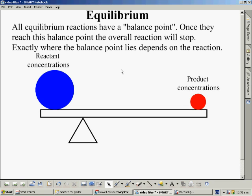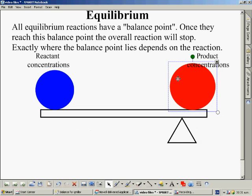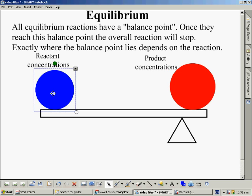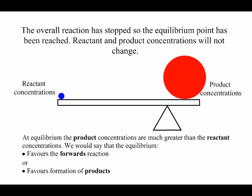So this is a sort of reaction that would stop even when there are quite large amounts of reactants still present. However we could change this around and move the fulcrum in which case the product concentrations are going to have to be high and be balanced out by a relatively small reactant concentration. So this reaction will go almost to completion but not quite.